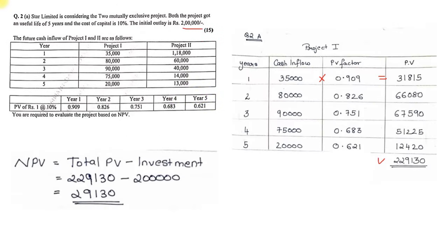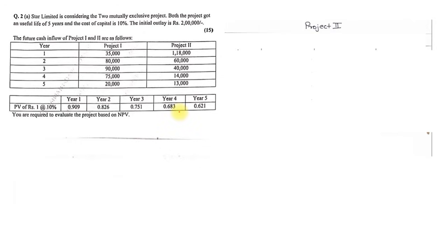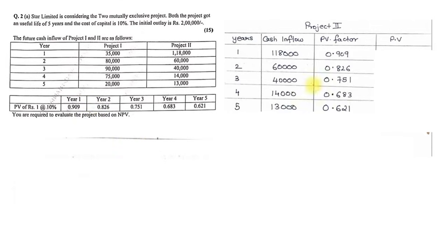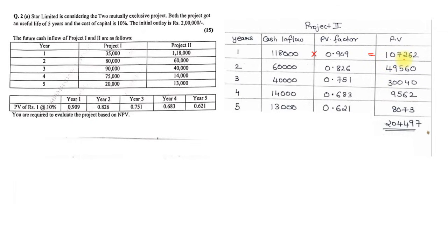Now for Project 2, we use the same column format. Cash inflows for years 1 to 5 are: 1,00,000; 18,060; 40,000; 14,000; and 13,000. PV factors remain the same: 0.909, 0.826, 0.751, 0.683, and 0.621. Multiplying gives present values of: 90,900; 14,920 (approx.); 30,040; 9,562; and 8,073. The total PV is 2,04,497.